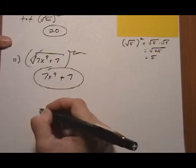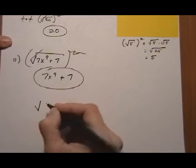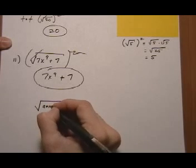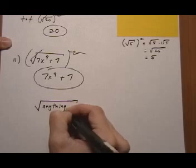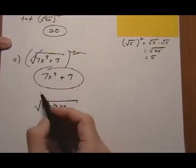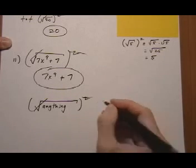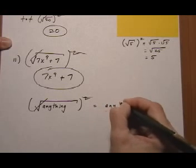And that's how you do it, no matter what you've got on the inside. So I could say square root of anything. And remember, the anything has to be non-negative. Squared gives you the anything back again.